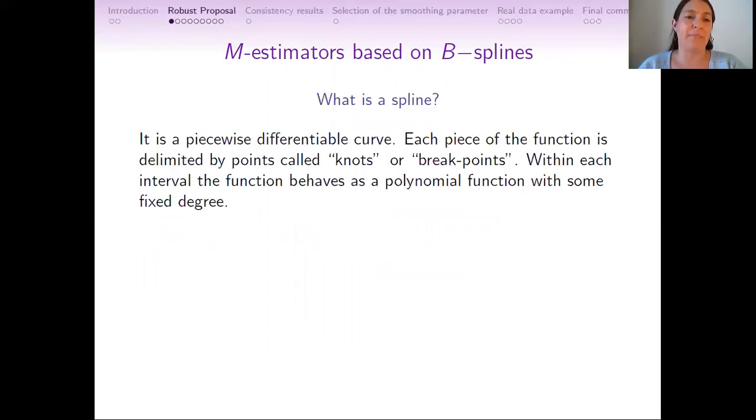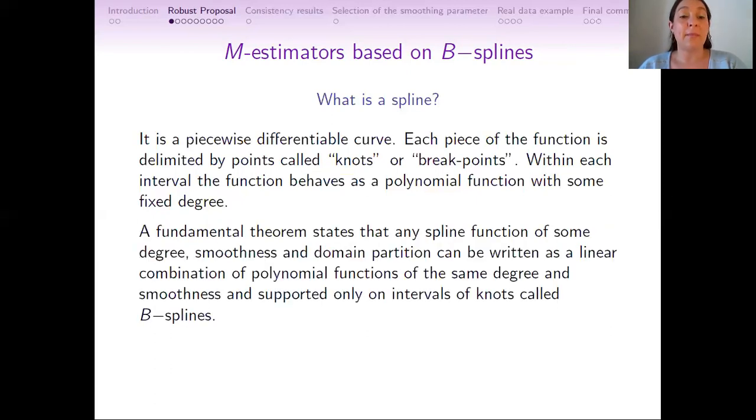But what is a spline? It is a piecewise differential curve. Each piece of the function is delimited by points called knots or breakpoints. Within each interval, the function behaves as a polynomial function with some fixed degree. A fundamental theorem states that any spline function of some degree, smoothness and domain partition can be written as a linear combination of polynomial functions of the same degree and smoothness but only supported in intervals of knots with minimal support. These functions are called B-splines.